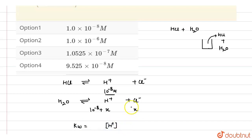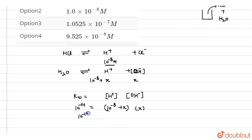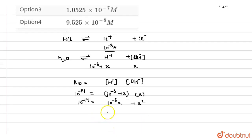We know that Kw equals the concentration of H⁺ multiplied by the concentration of OH⁻. So concentration of H⁺ is (10⁻⁸ + x), concentration of OH⁻ is x, and Kw is 10⁻¹⁴. This gives: 10⁻¹⁴ = (10⁻⁸ + x)(x), which expands to x² + 10⁻⁸x − 10⁻¹⁴ = 0.